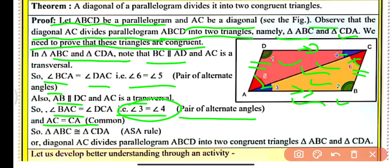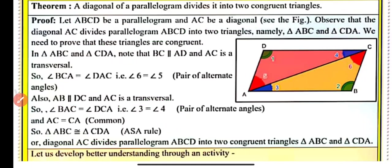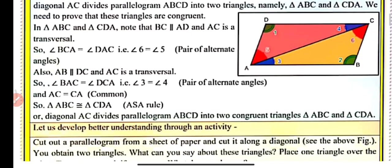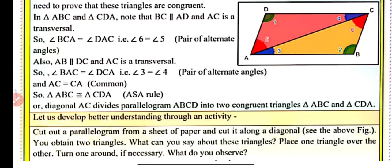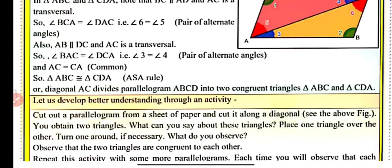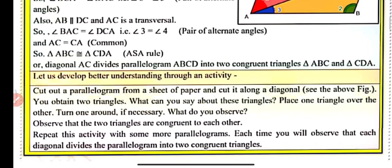AC is common to both triangles. So triangle ABC is congruent to triangle CDA by the Angle-Side-Angle congruency criteria. Therefore the diagonal AC divides parallelogram ABCD into two congruent triangles ABC and CDA.